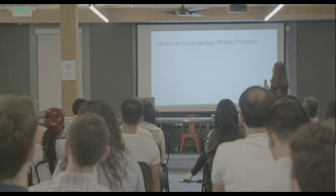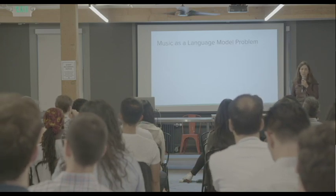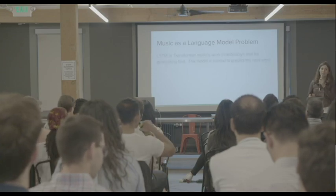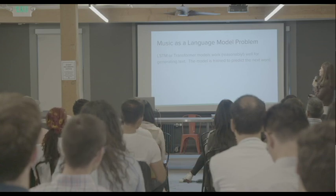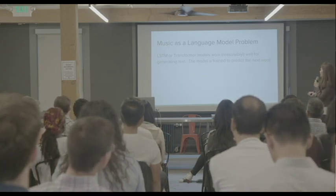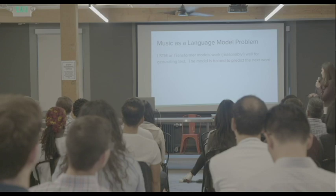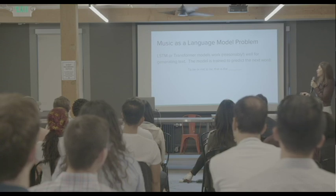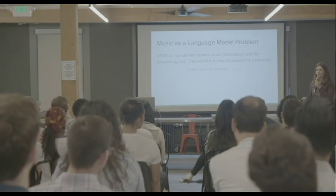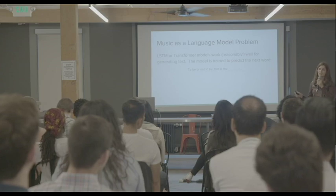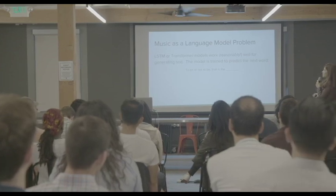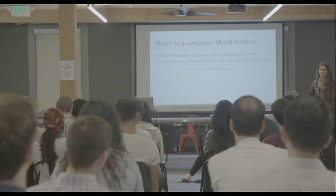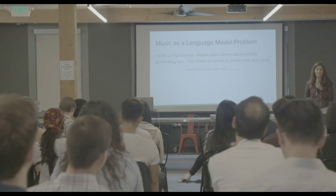So a nice way to think about music generation is to think about it as a language model problem. For language modeling we usually use an architecture, maybe something like an LSTM or a transformer. And we train it on the task, we give it a prompt sentence or a sequence of words, and then we ask it what should the next word be. And once you have a model that's really good at this, it's actually pretty convenient to turn it into a generator. You just take this word that's predicted, feed it back into the model, and then ask it to predict the next word, and so forth. And you can create a text or a piece of music as long as you want.